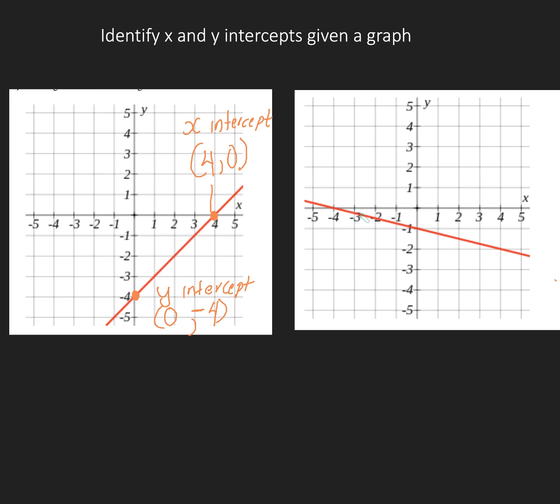Over here I want to find my x-intercept. So I look to see where the line is cutting the x-axis which is here. If I had to write that point my x value is negative 4 and I can't go up or down so my y is 0.